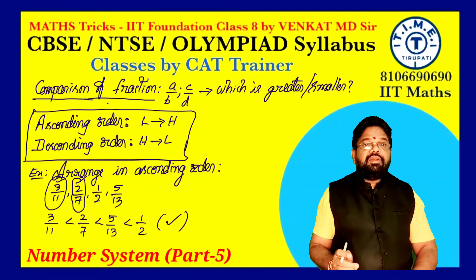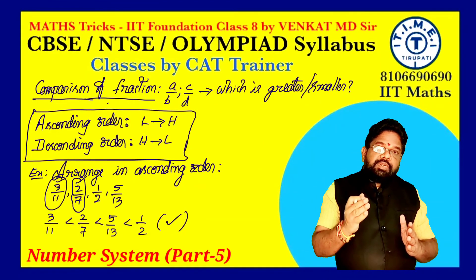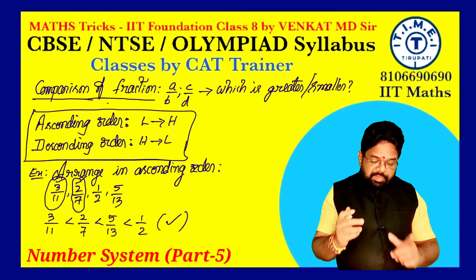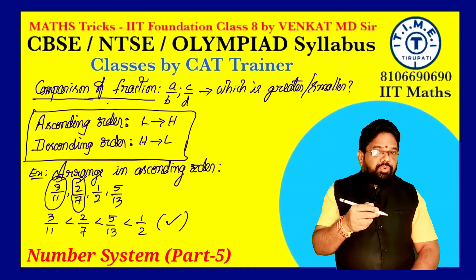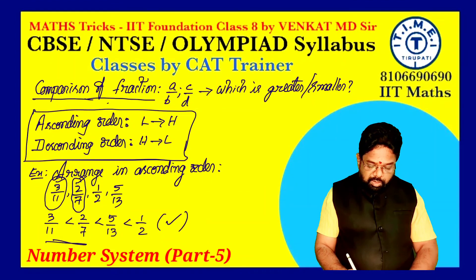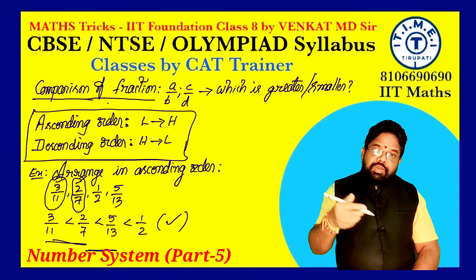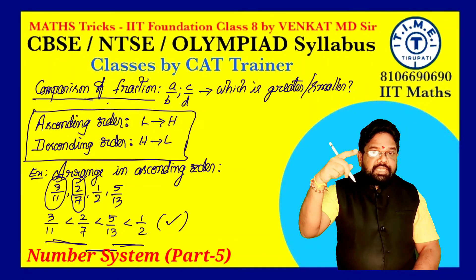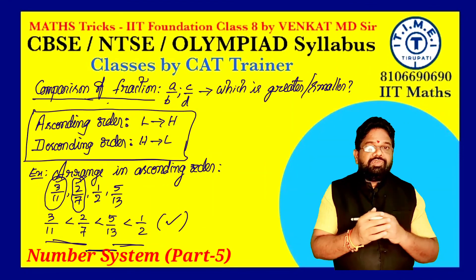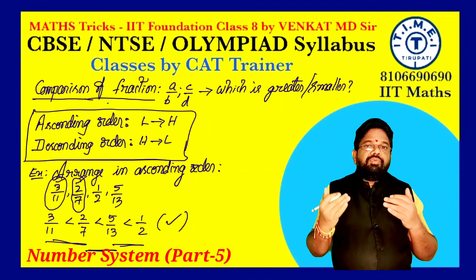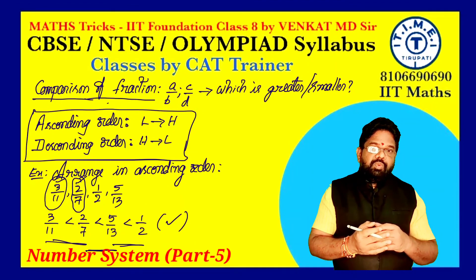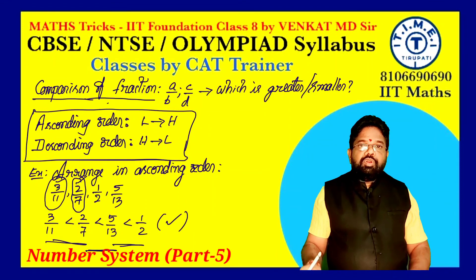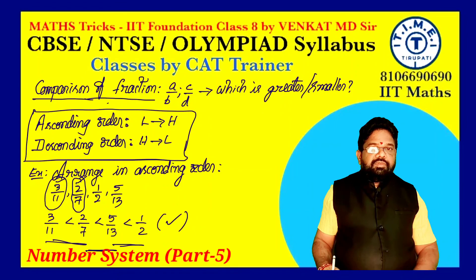Checking is very easy: the second fraction must be greater than the first, third greater than the second, fourth greater than the third. Do cross multiplication: 3×7=21 vs 2×11=22 — correct. 2×13=26 vs 5×7=35 — correct. 5×2=10 vs 1×13=13 — correct. So the order is confirmed. Similarly you can calculate descending order — highest to least. You can do it on your own. Thank you.